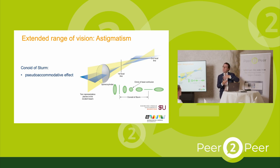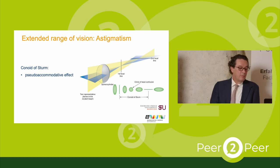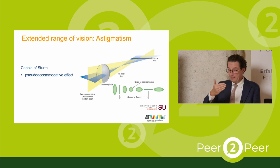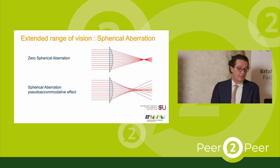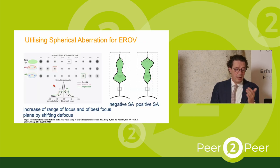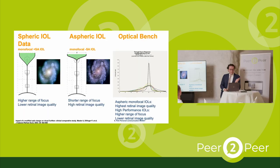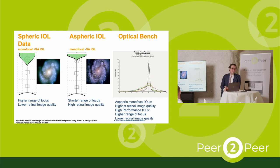Hybrid lenses use asphericity and combine it with multifocal optics. We have extended range of vision with astigmatic correction, which helps create some kind of intermediate vision. With spherical aberration — negative or positive — we create a wider focus line, which helps especially in the intermediate area to create some usable visual function.